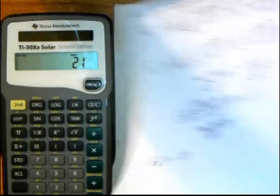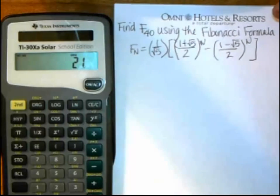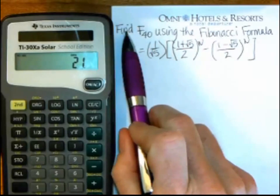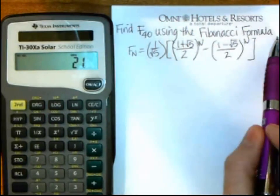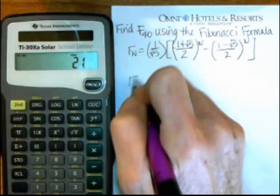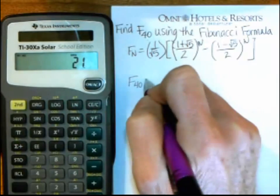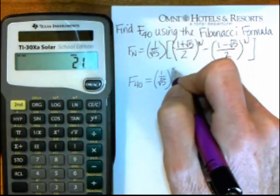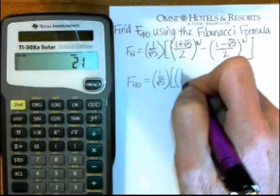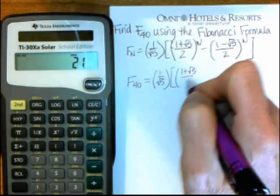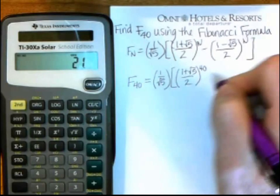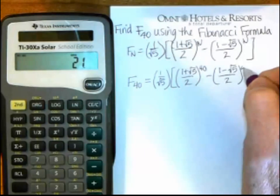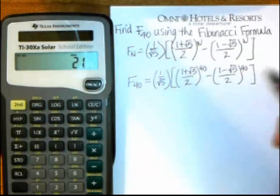Let's do one more, and this one is a little bit larger number, so we won't be able to verify it as quickly, but find F sub 40 using the Fibonacci formula. So I'm going to rewrite everything with the 40 equals, so I have 1 over the square root of 5 times the big quantity, 1 plus the square root of 5 over 2 raised to the 40th power minus 1 minus the square root of 5 over 2 raised to the 40th power, and end the parentheses.